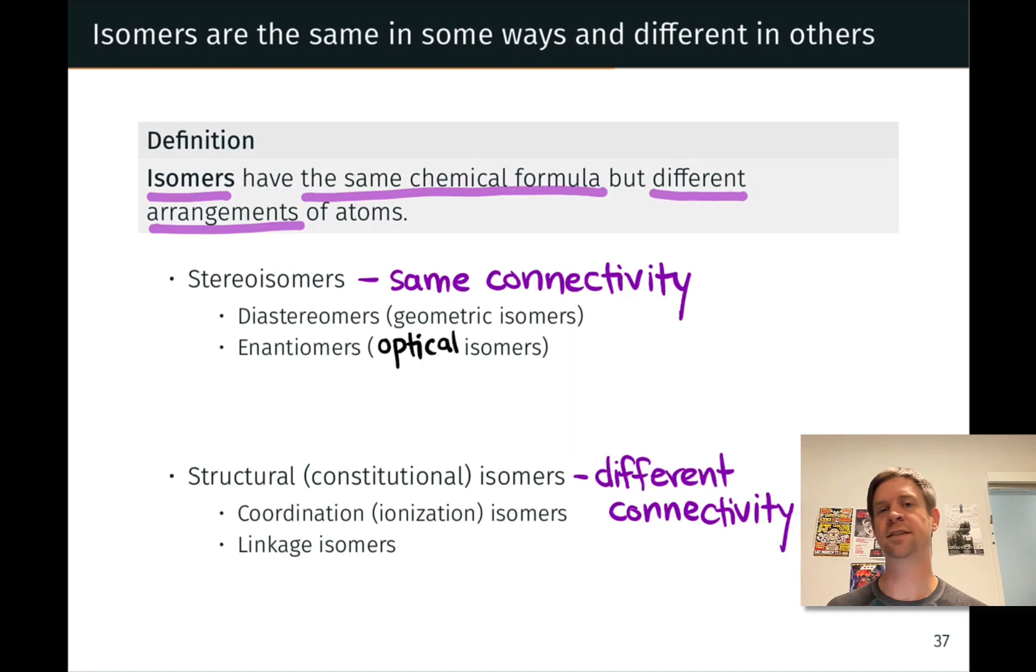but those bonds are oriented differently in three-dimensional space. This gives rise to different chemical and physical properties in some cases, although because they have the same bonds, stereoisomers are chemically similar to each other. They engage in many of the same types of reactions, for example, but they may react at different rates. There are two classes of stereoisomers,